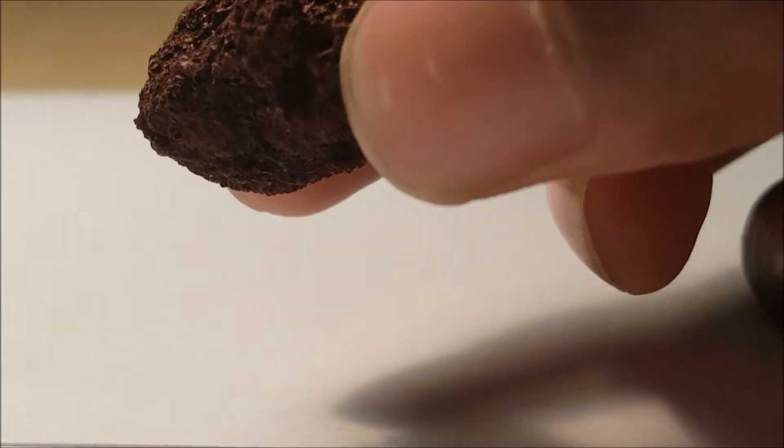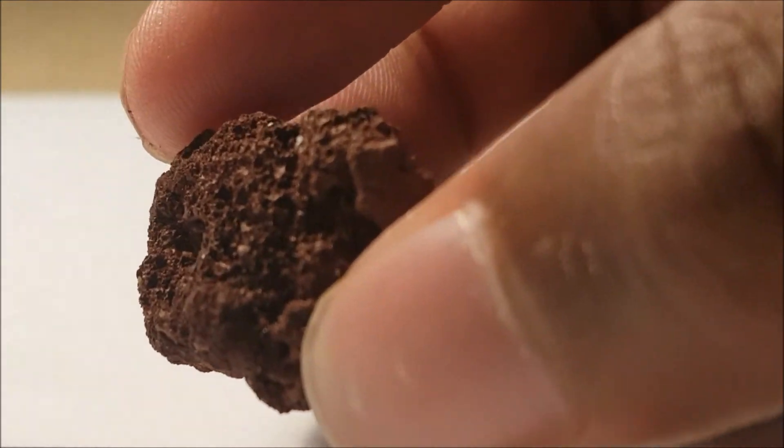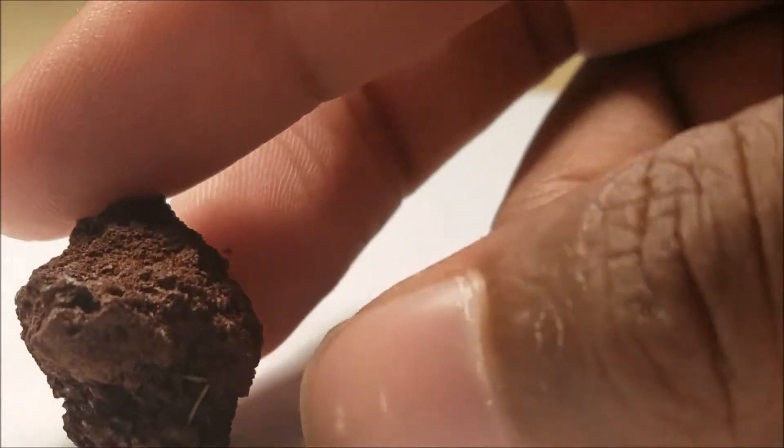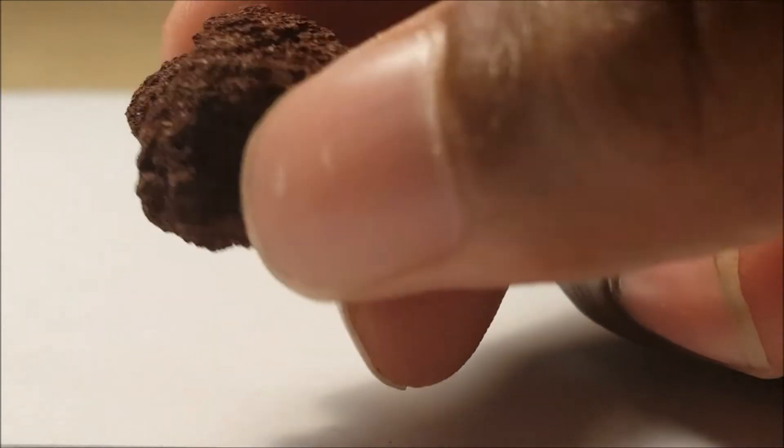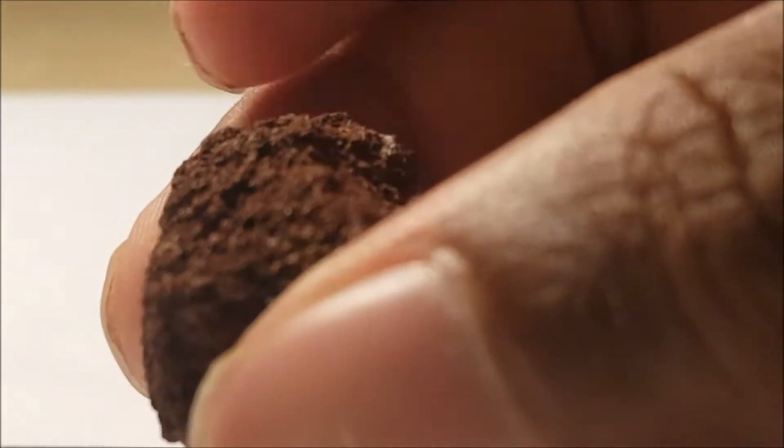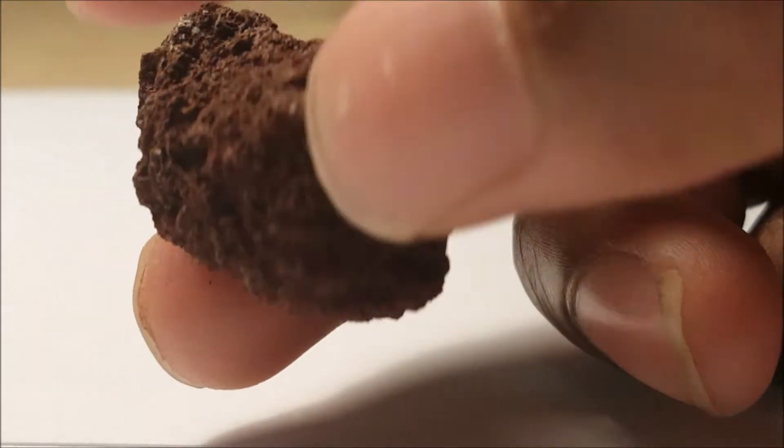It is important to understand the difference between pumice and scoria. Pumice has a whitish gray appearance. Scoria is darker. It ranges from black to brown to reddish purple.